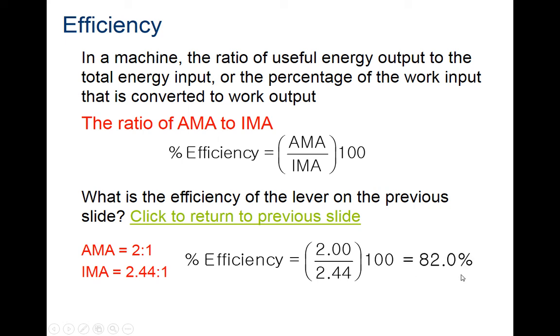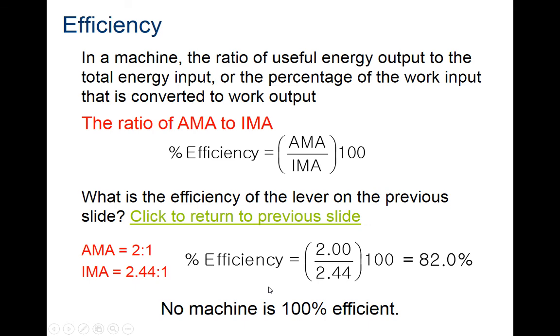2 divided by 2.44 is 82%, so about 18% is lost to friction. No machine is going to be 100% or more efficient because there's always friction, and that's always going to take away some of our mechanical advantage. In our next video, we'll talk about a wheel and axle.